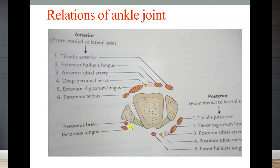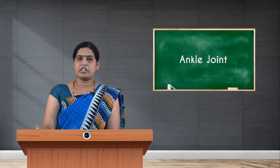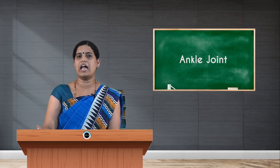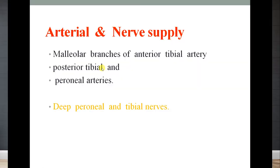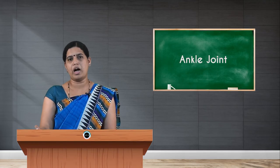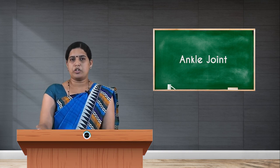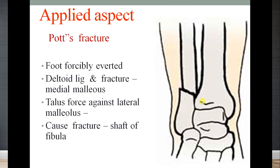Lateral relations are the lateral compartment muscles — peroneus longus and peroneus brevis — with the superficial peroneal nerve as the nerve of the lateral compartment. The arterial supply includes malleolar branches from the anterior tibial artery, both medial and lateral malleolar branches, and articular branches from the posterior tibial and peroneal arteries. Nerve supply comes from articular branches of the deep peroneal and tibial nerves.